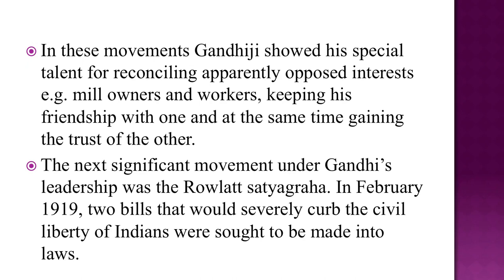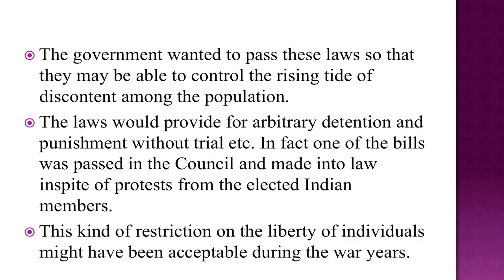The next significant movement under Gandhi's leadership was the Rowlatt Satyagraha. In February 1919, two bills that would severely curb the civil liberty of Indians were sought to be made into law. The government wanted to pass these laws to control the rising tide of discontent. The laws would provide for arbitrary detention and punishment without trial. One of the bills was passed in the council and made into law in spite of protest from the elected Indian members.